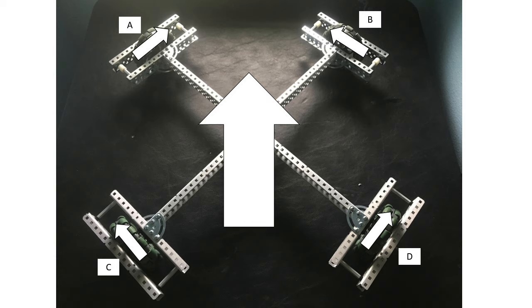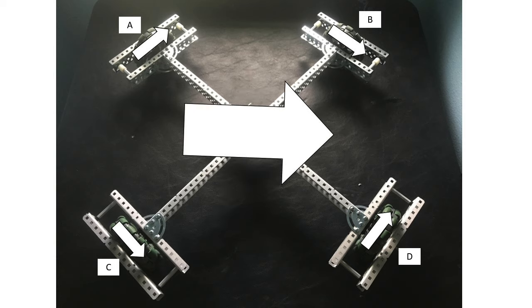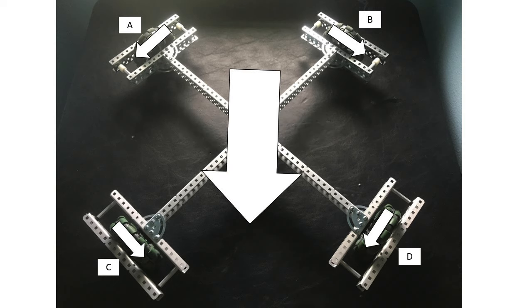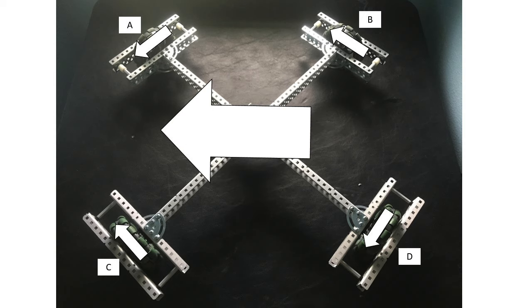If we move wheels A and B toward the middle and wheels C and D toward the outside, we move forward. If we extrapolate this to the other three main directions, we can see how to drive each set of wheels. Feel free to pause the video to see in more detail.